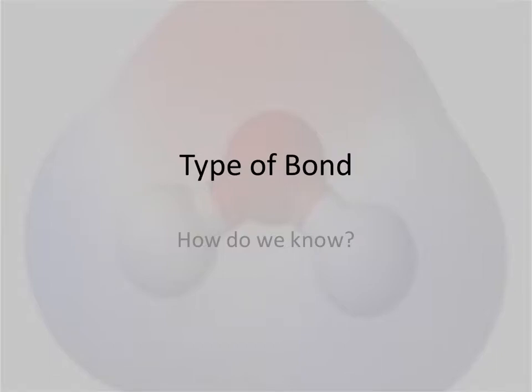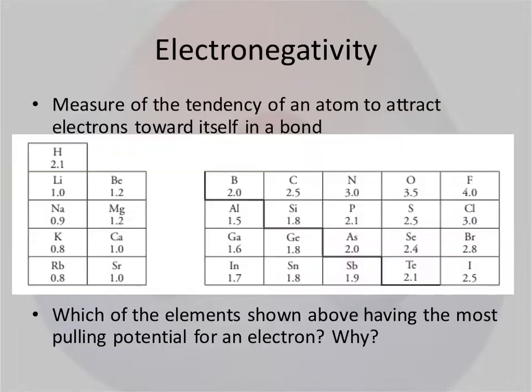In this podcast we're going to talk about the type of bond that will form and how we know that. So first let's talk about electronegativity. It's the measure of the tendency of an atom to attract electrons towards itself when it's in a bond.